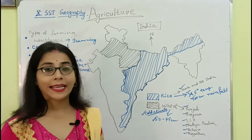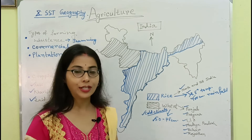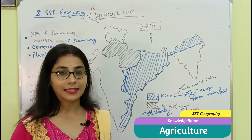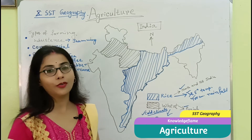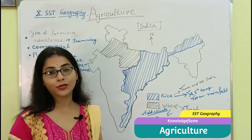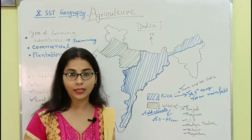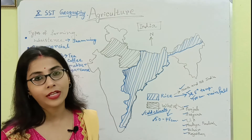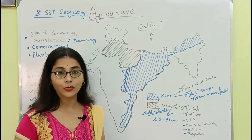Hello students, today our topic is agriculture which belongs to CBSE class 10 SST geography. First of all we have to start our discussion with the meaning of agriculture. Agriculture means the process of growing crops and also rearing animals.